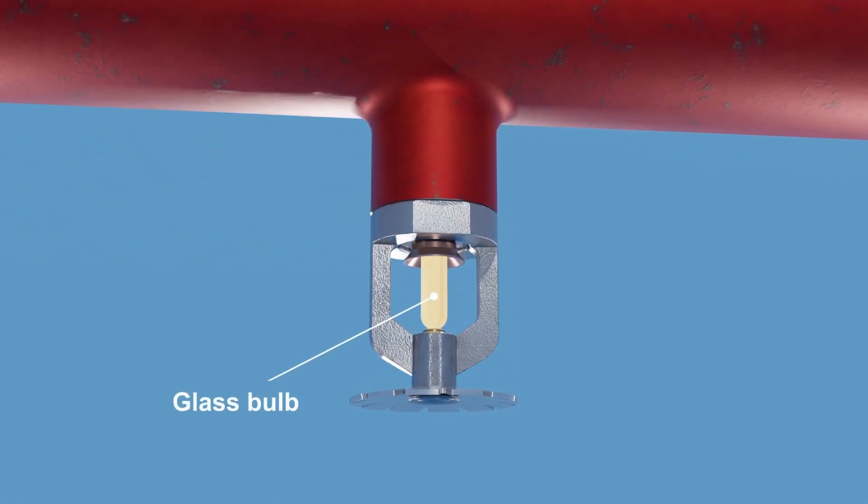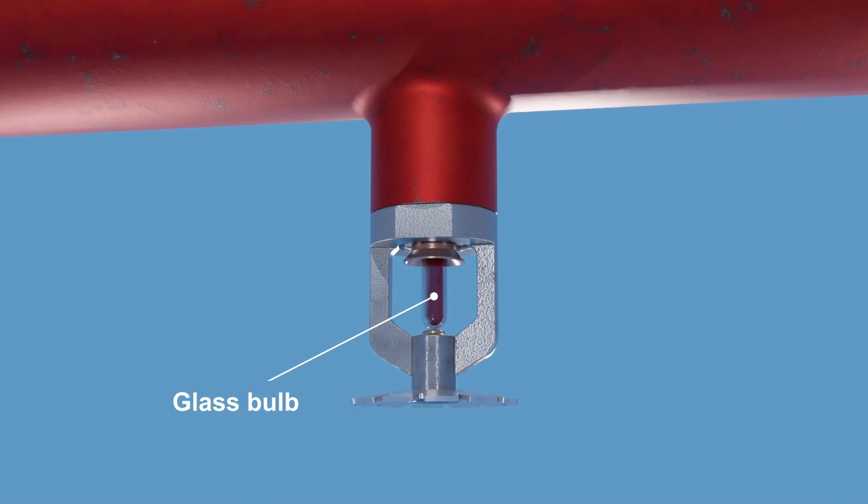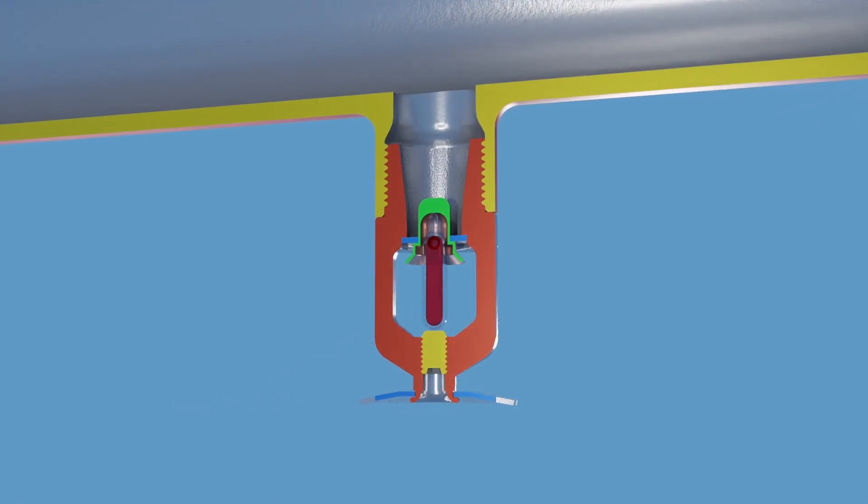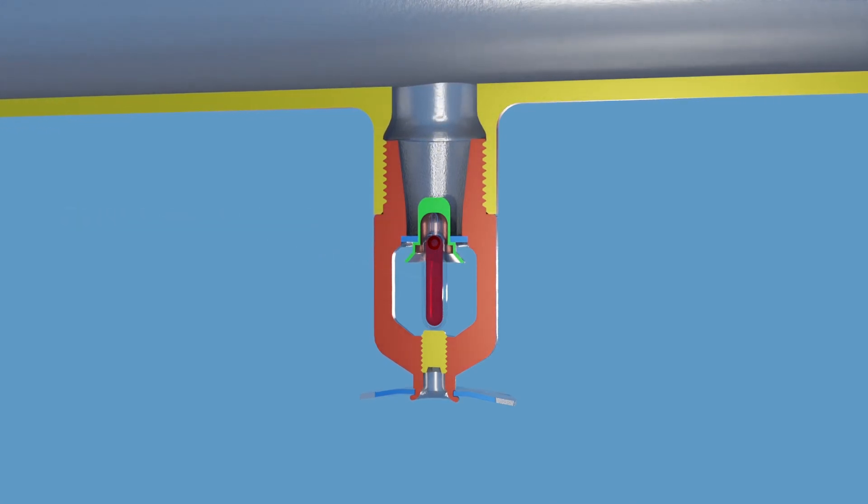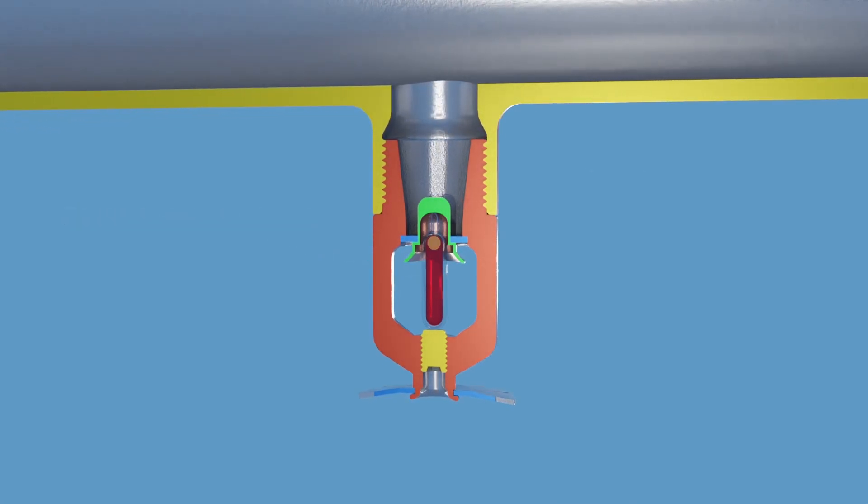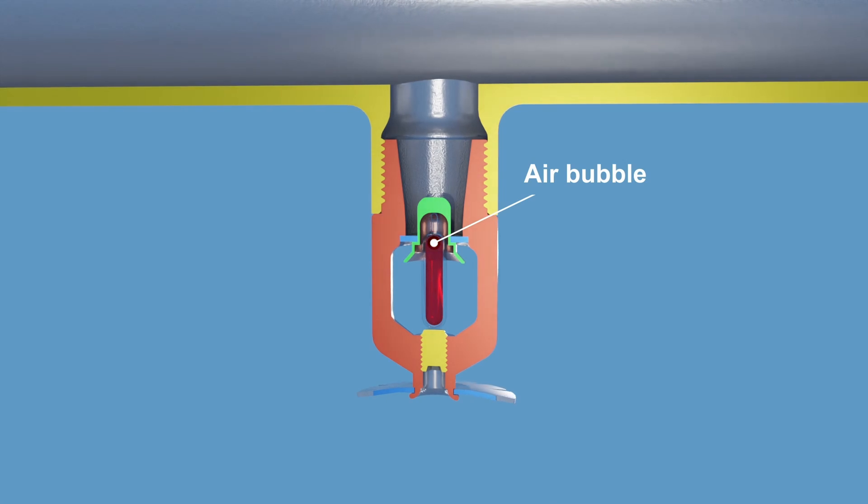This is the glass bulb, the active element of the sprinkler head. The bulb is filled with a glycerin-based liquid that expands when heated, causing the bulb to break at a certain temperature. Inside, there's an air bubble to allow for some expansion of the liquid without immediately causing the bulb to break.